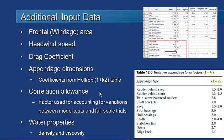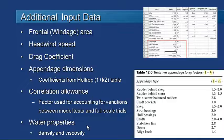Another possible additional data entry item is the correlation allowance. That's a factor used to account for differences between model tests and full-scale tests. It defaults to 0.0004. Some methods will calculate the correlation allowance automatically, but you can override that for other methods if you wish. And finally, although it will be rare, you can modify the water properties if you need to.